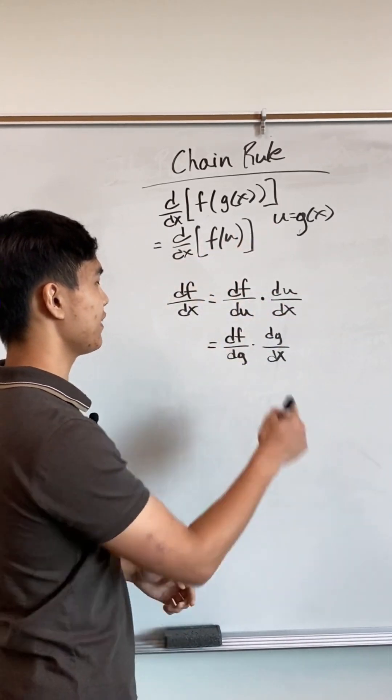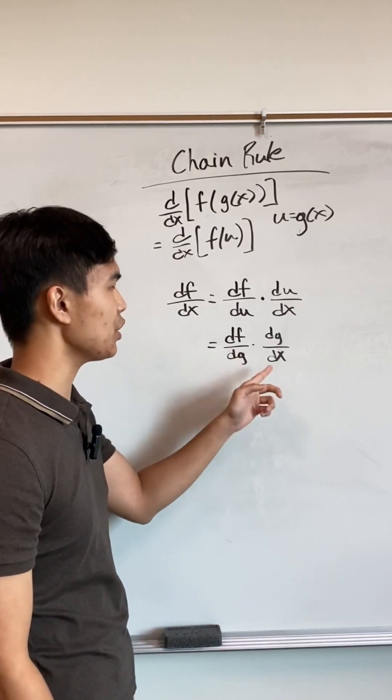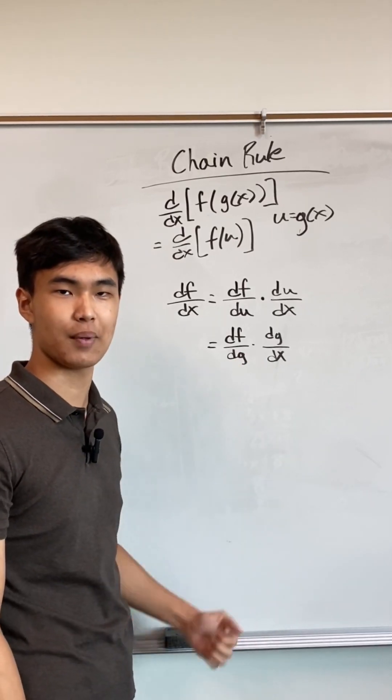And because we said u equals g of x, we can say this is df/dg times dg/dx, or the derivative of f with respect to g times the derivative of g with respect to x. And that's how you differentiate a composite function.